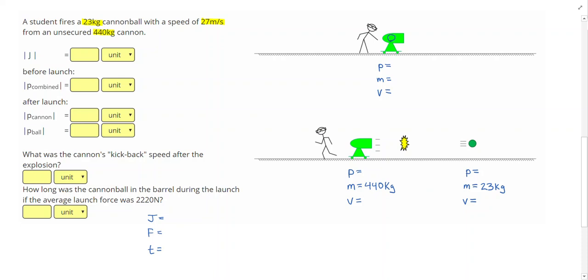At the start, the cannonball is inside the cannon. It doesn't really matter in this problem, but technically for my mass here, I should do 440 plus 23, which gives me 463 kilograms. The problem says the cannonball was fired with a speed of 27 meters per second. That's after the explosion. The velocity is 27 meters per second, which means I know enough to figure out the cannonball's momentum.